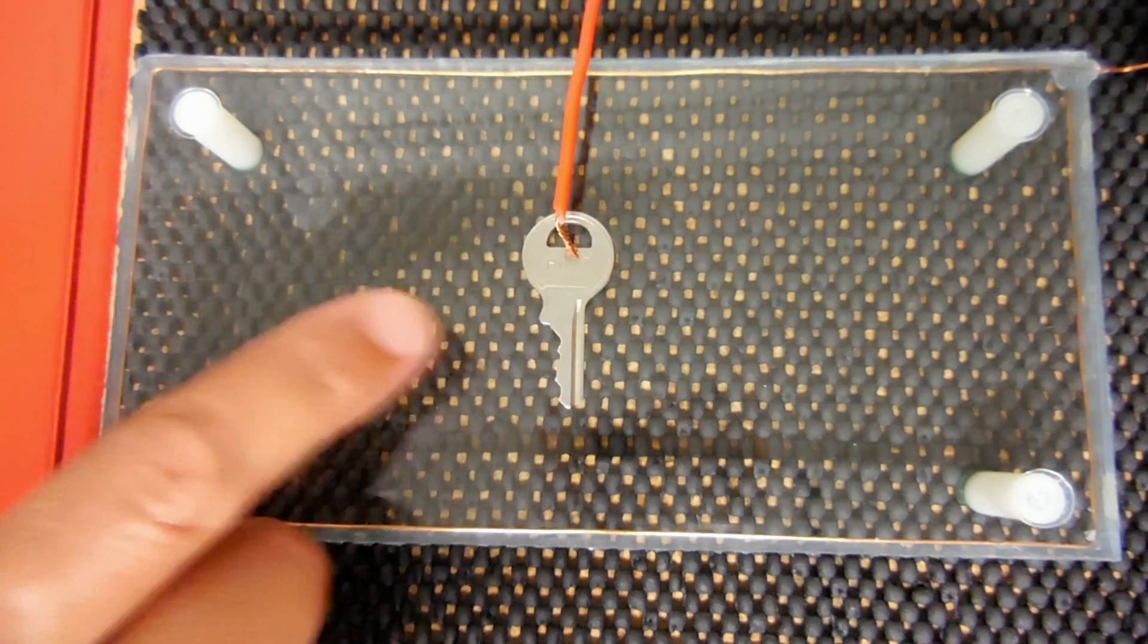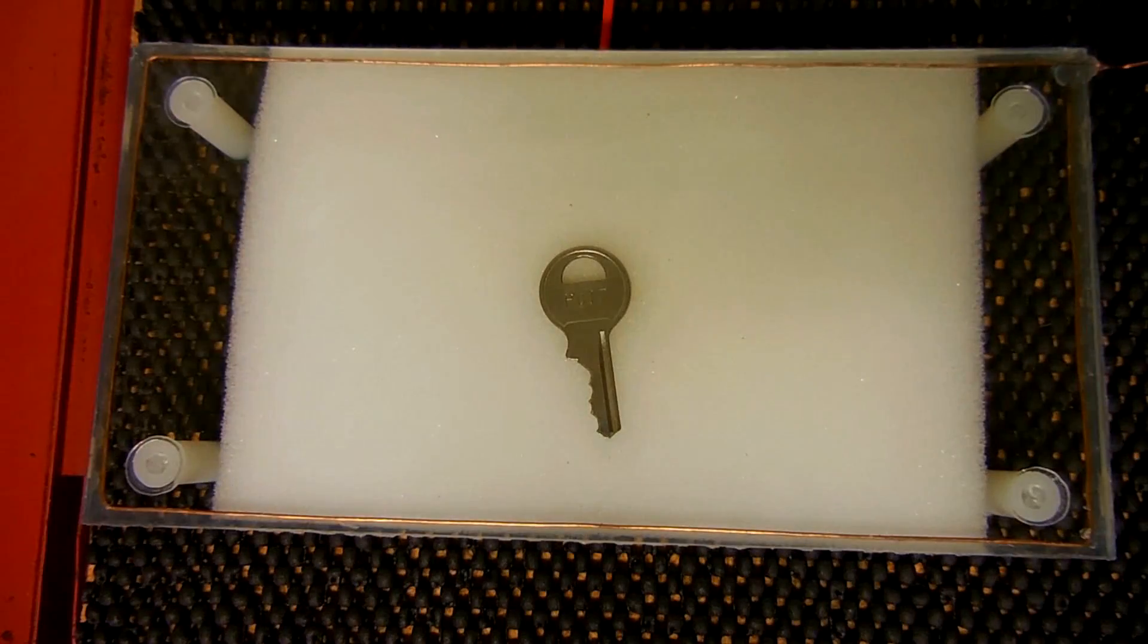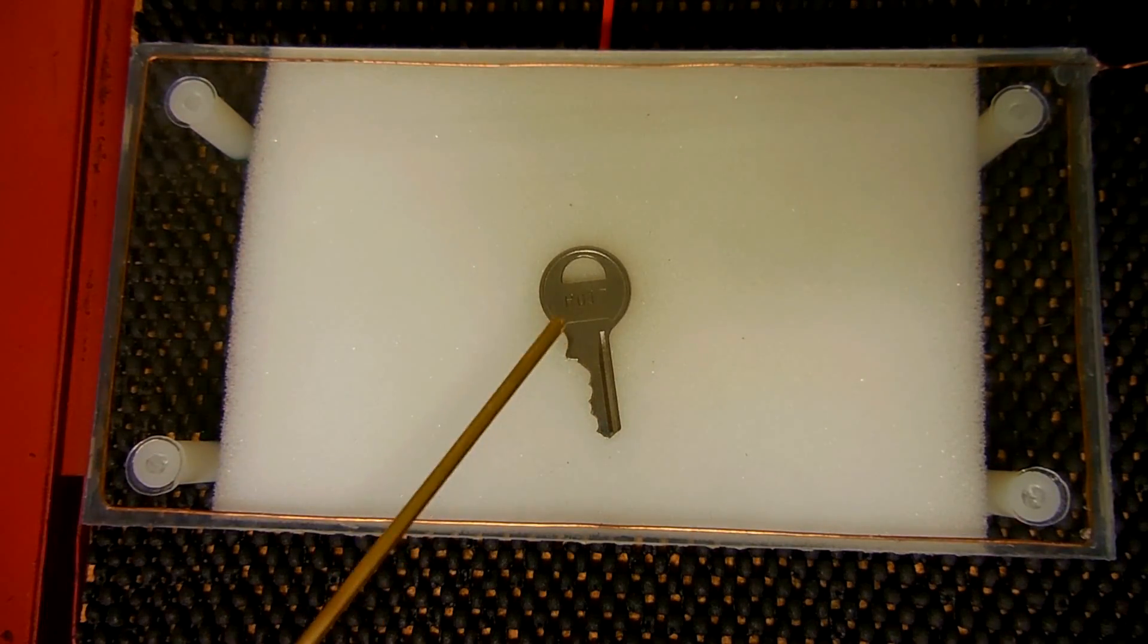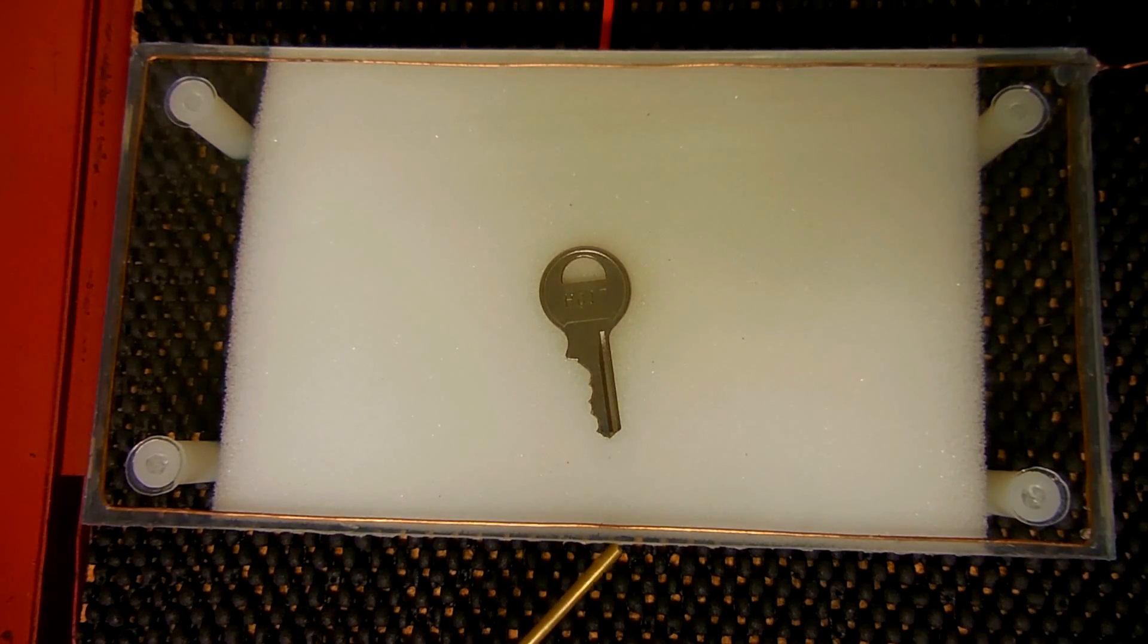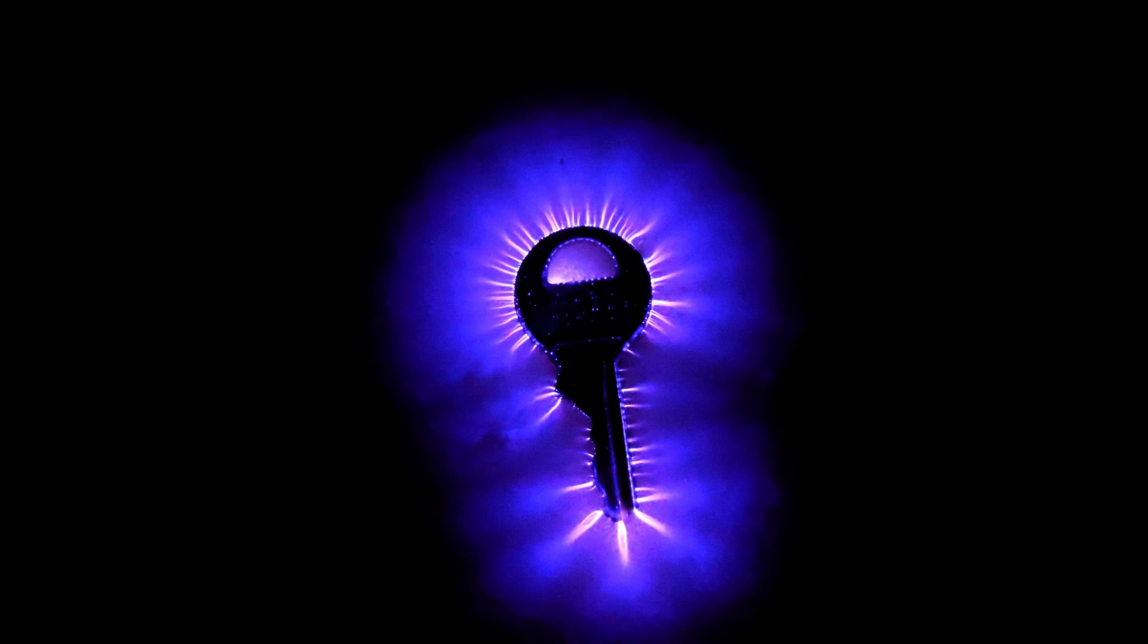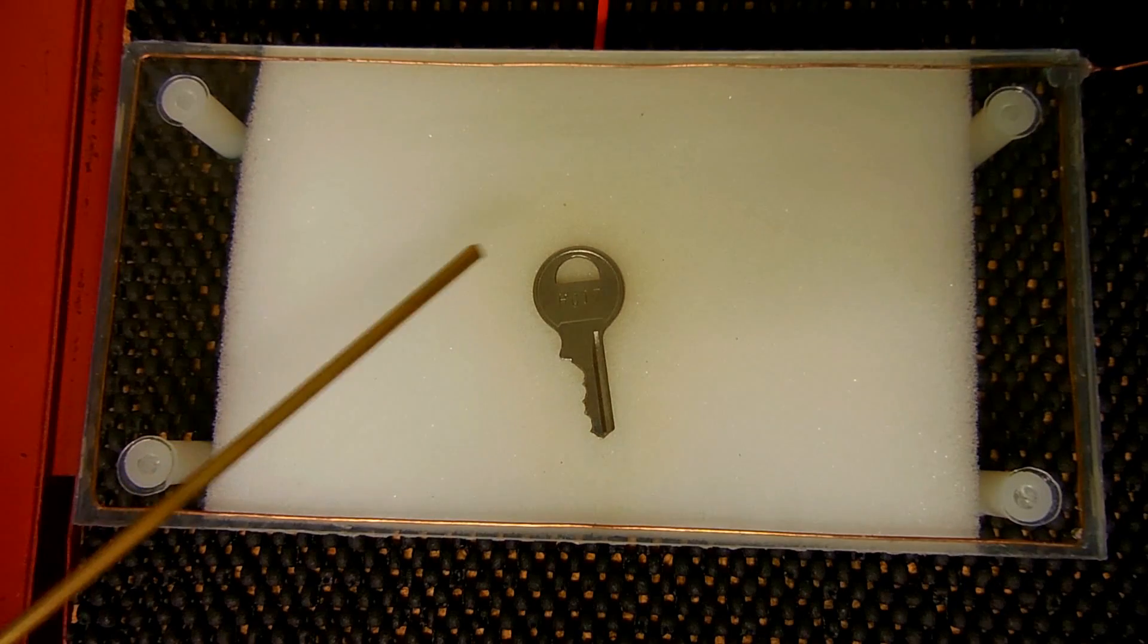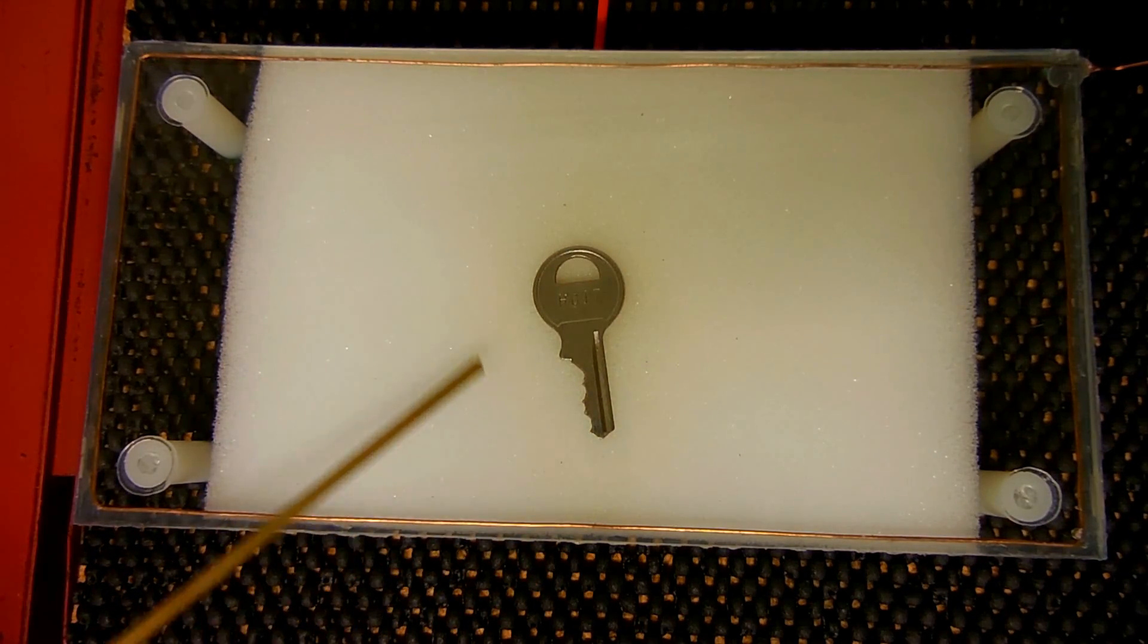What we're going to do now is take the key, place it underneath the glass, and repeat the process. The wire is now underneath the key touching the backside of the key, and we have the key pressing up against the backside of the glass. As you saw, it works the exact same way. The only exception is you get a better glow around the edge of the key because of the white foam.